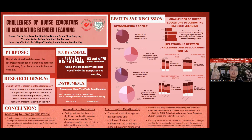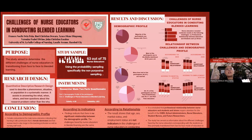For the results and discussion, in the demographic profile, the majority of the participants are female, with a percentage of 79.4%. Twenty-eight out of 63 participants were in the middle adulthood age bracket of 36 to 50 years old. More than half of the participants, at 61.9%, were married. As to employment status, 32 out of 63 were full-time, probationary, and part-time educators.